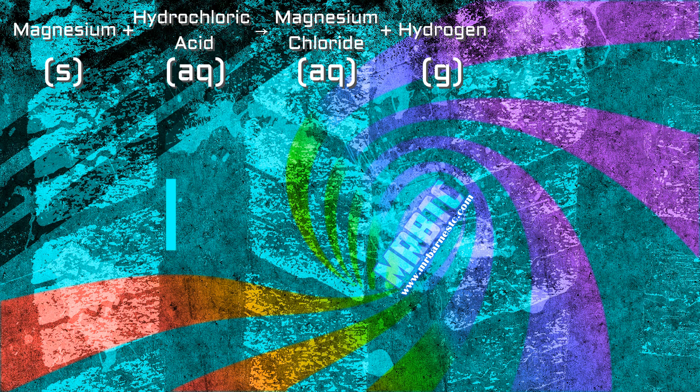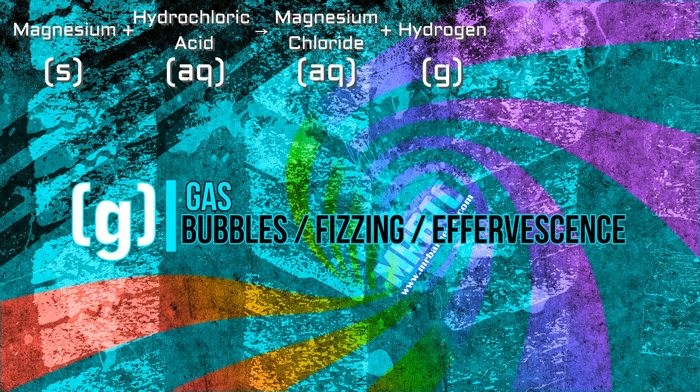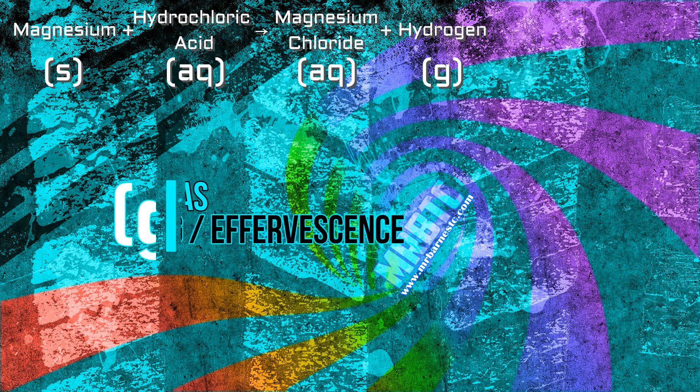The other thing to look out for is if you have a gas on the right hand side in your products, if you have a gas you have bubbling, fizzing or effervescence. Make sure that you say one of those three not that you see a gas because you can't see a gas therefore you wouldn't get the mark for it in the exam.